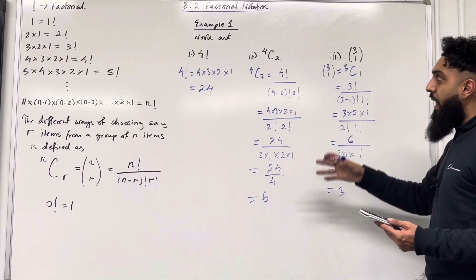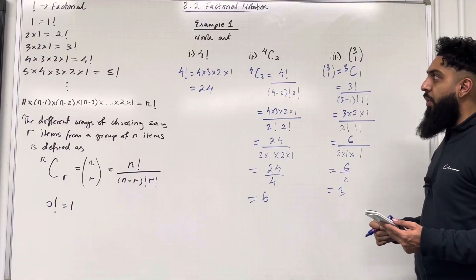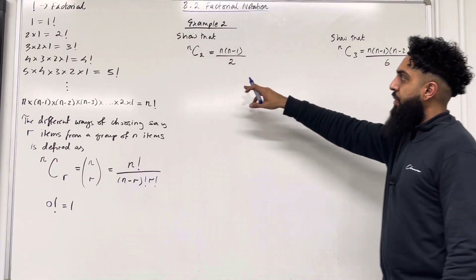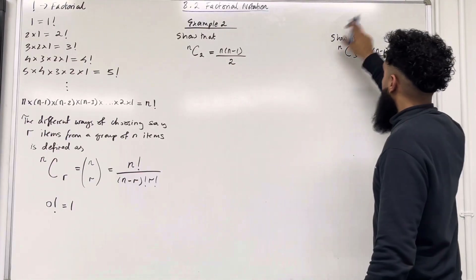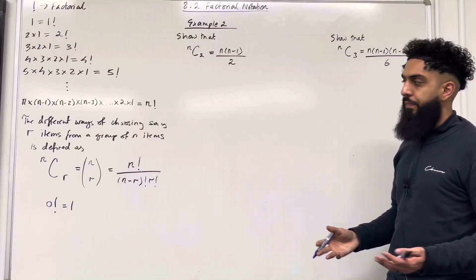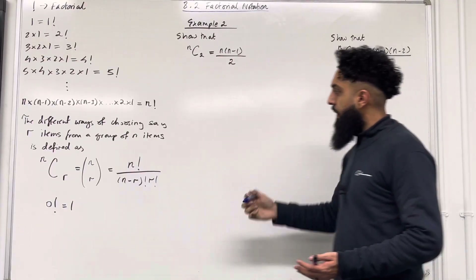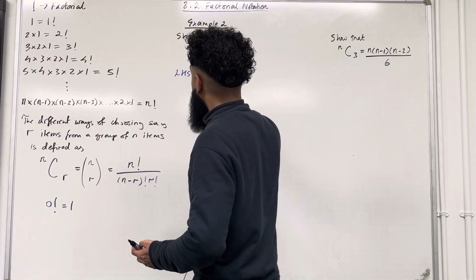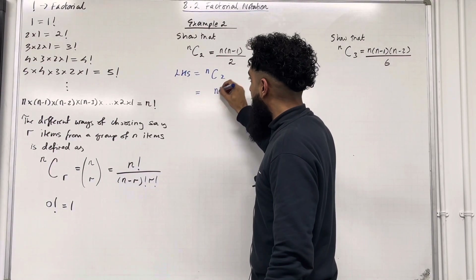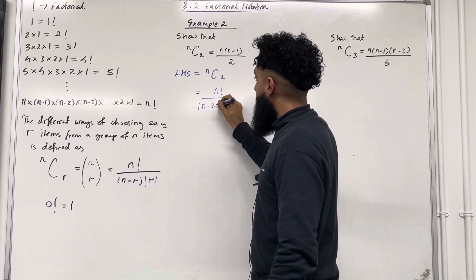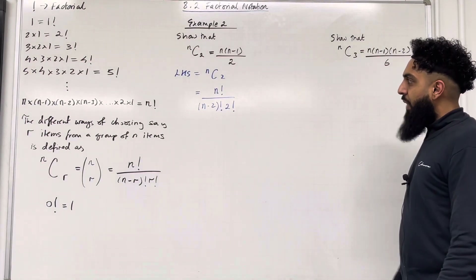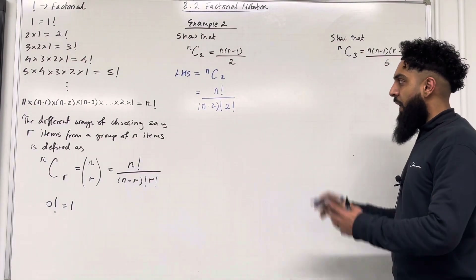That is the end of example 1. Example 2: show that n choose 2 is equal to a given fraction, and show that n choose 3 is equal to a given fraction. We're going to use a bit of algebra. Starting with n choose 2 — that's our left-hand side. By definition, this is equal to n factorial over (n minus 2) factorial times 2 factorial.